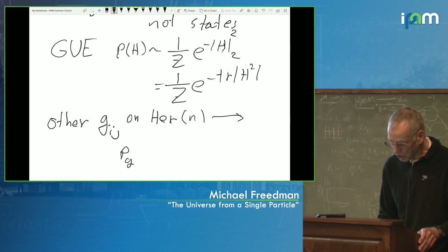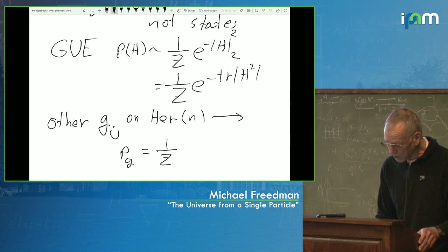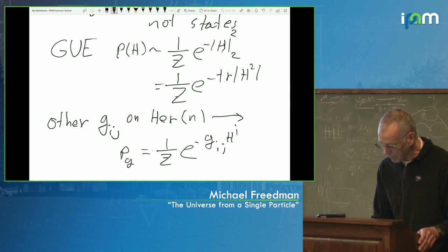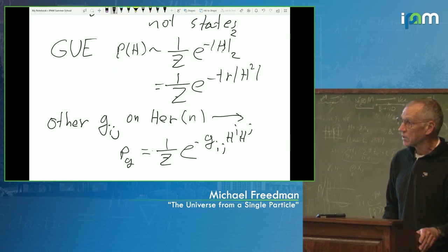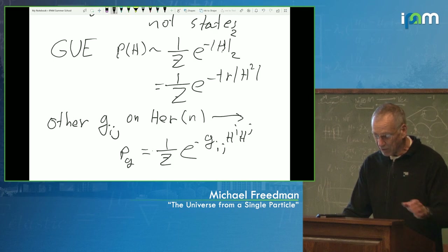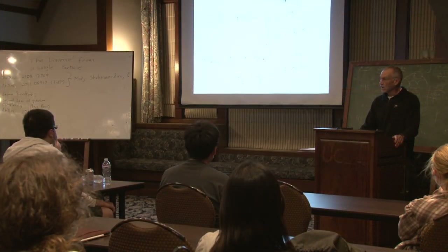The new distribution based on metric G_ij would be, up to normalization, e to the minus the length squared of the Hamiltonian in that metric, which would be G_ij contracted with the components of the Hermitian matrix in its basis. So if I change the metric on the space of Hermitian matrices, I change the notion of a random matrix.